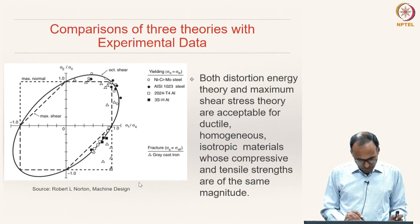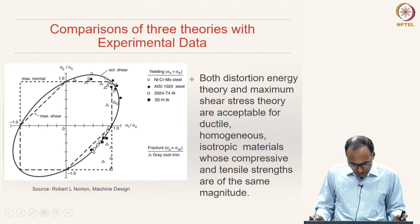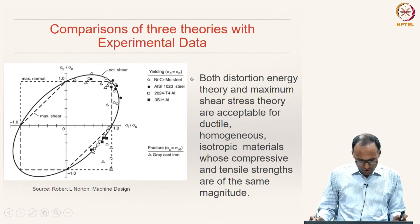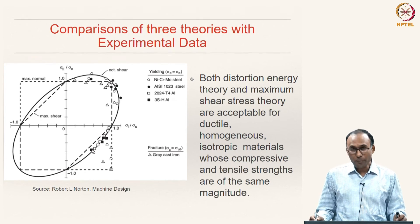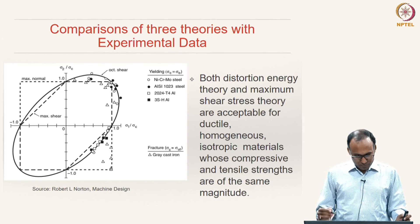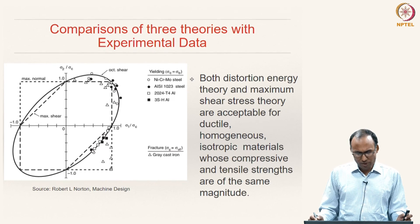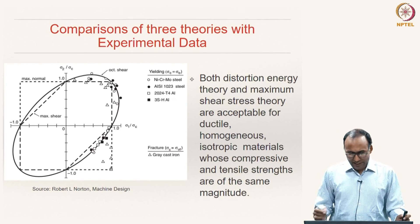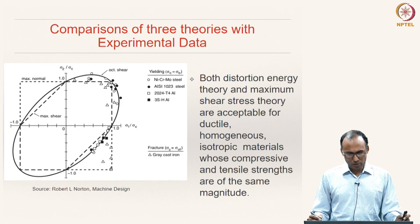The experimental data of several materials matches very well with both theories. The exception is open triangles representing gray cast iron, which matches well with normal stress theory — because gray cast iron is a brittle material, which is why distortion energy theory and maximum shear stress theory cannot be used for brittle materials. For ductile materials like nickel, chromium-molybdenum steels, and aluminum alloys (represented by circles and squares), the data matches very well with both distortion energy and maximum shear stress theory, which is why these two theories are still used extensively for static loading failure characterization.